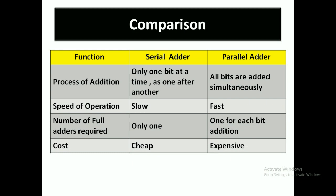The number of full adders required for a serial adder is only one, but for a parallel adder, one full adder is needed for each bit addition. Regarding cost, the serial adder is a much cheaper option compared to the parallel adder.